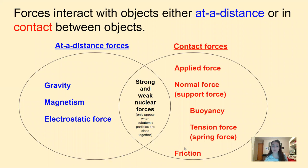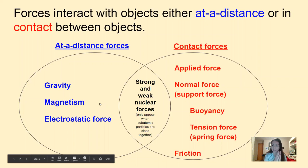You can break this down more by how the forces interact, whether it's at a distance or in contact between the two objects. At-a-distance forces are gravity, magnetism, and electrostatic force. These forces don't necessarily have to have the two objects touching or in contact in order for the force to have an effect on the objects. You don't necessarily need to be touching the surface of the earth to feel gravity pull downward on you.